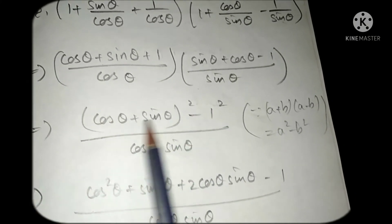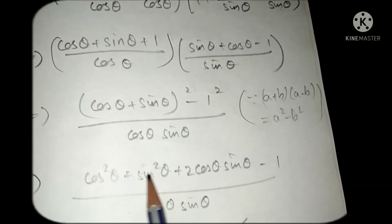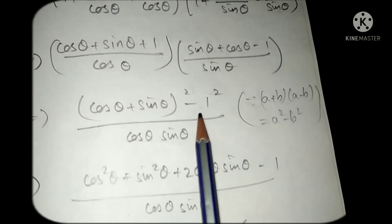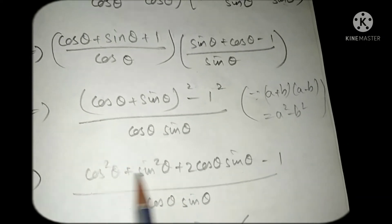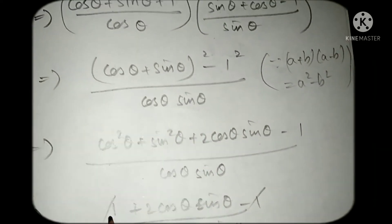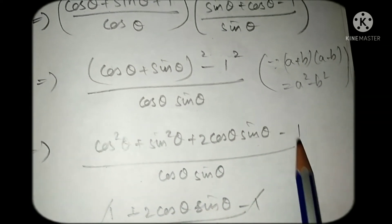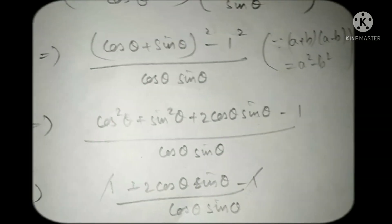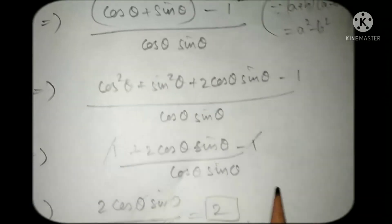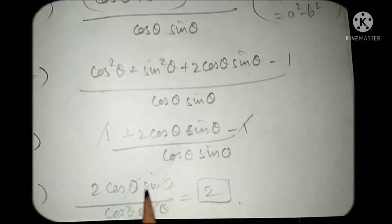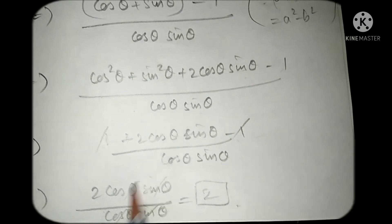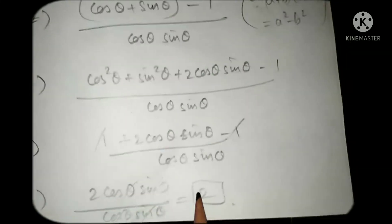Now (a + b)² formula we are using: a² + b² + 2ab minus 1. Here by using the identity, we can write 1 and here 2 cos θ sin θ - 1 as it is. Plus minus cancel, and here we can see this is in multiplication. Now we can cancel this cos, cos, sin, sin. You will get the answer 2.